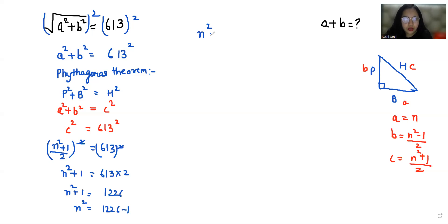n² = 1225 and 1225 is the square of 35. So the value of n is 35.